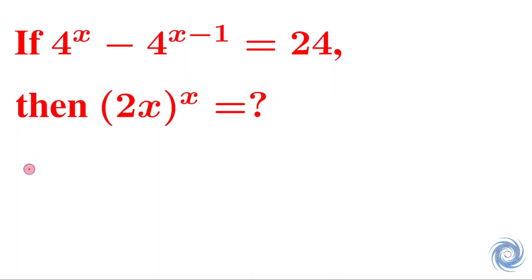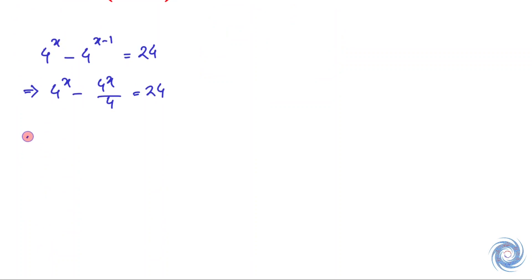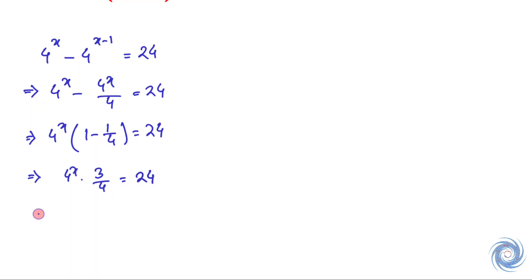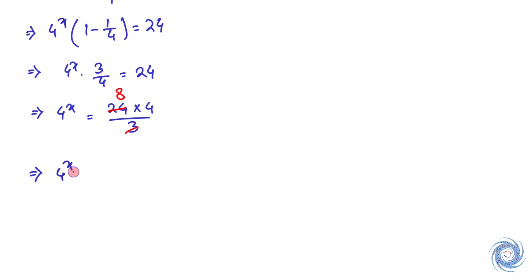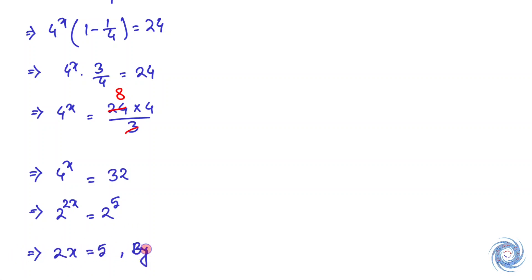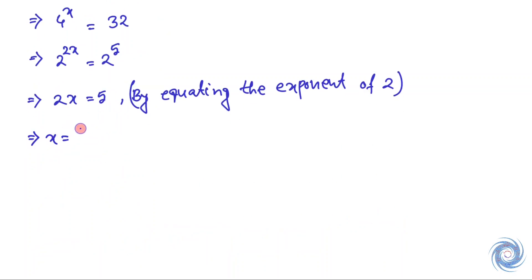Let us write down the given equation. From here we have, and this implies, and from here we have, from here we have, equating the exponent of 2 we have, so finally we have x equals to 5 over 2.